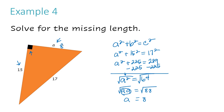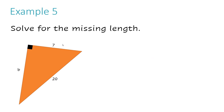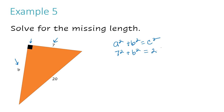Let's take a look at example number five: solve for the missing length. This time B is our missing length. Starting with the formula: a² + b² = c². A has to be 7 because it's next to the 90-degree box. So 7 squared plus B squared equals C squared, which is 20 squared. Now solving: 7 times 7 is 49, plus B squared, equals 400 because 20 times 20 is 400.